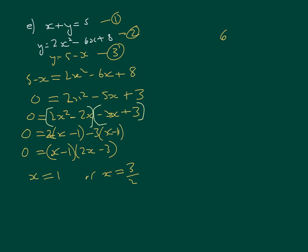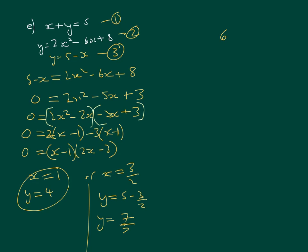Substituting into equation 3: when x equals 1, y equals 5 minus 1, which is 4. When x equals 3 over 2, y equals 5 minus 3 over 2. Since 5 is 10 over 2, y equals 7 over 2. So our two solution pairs are x equals 1 with y equals 4, and x equals 3 over 2 with y equals 7 over 2.